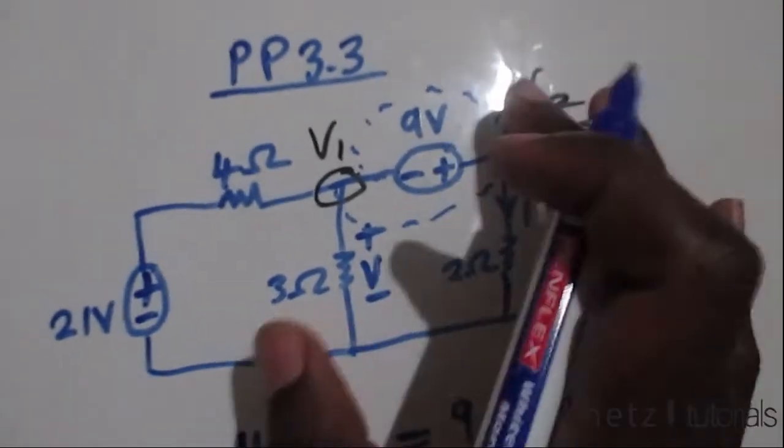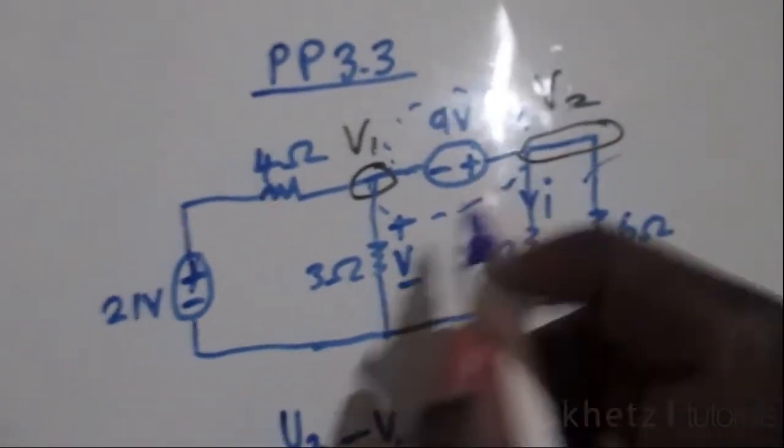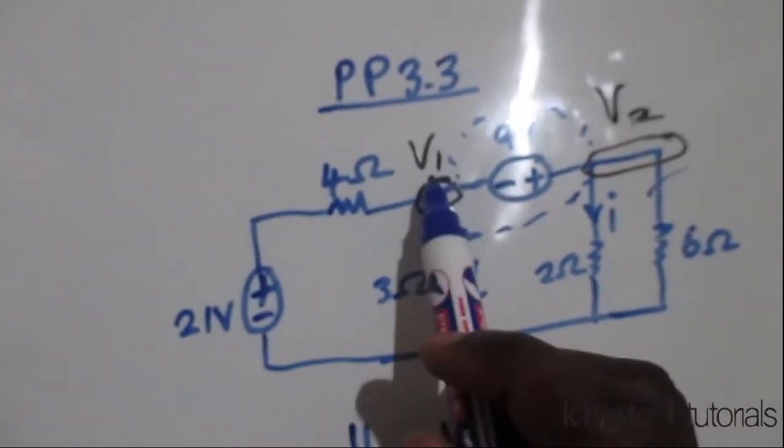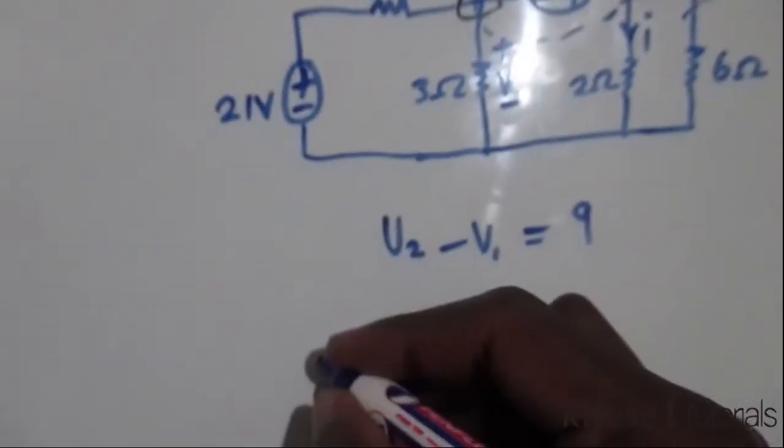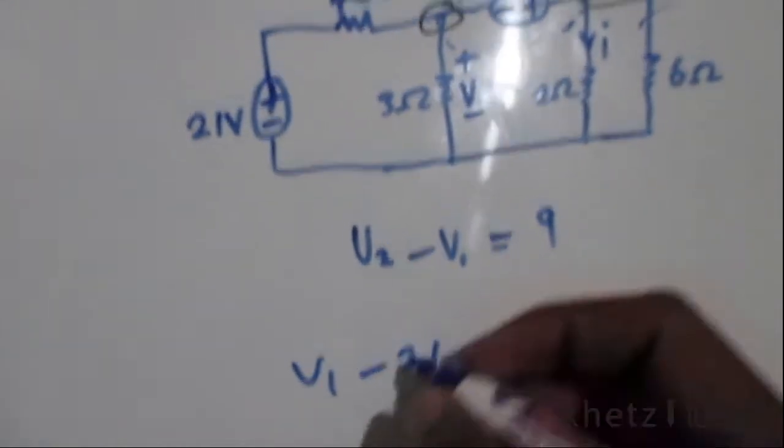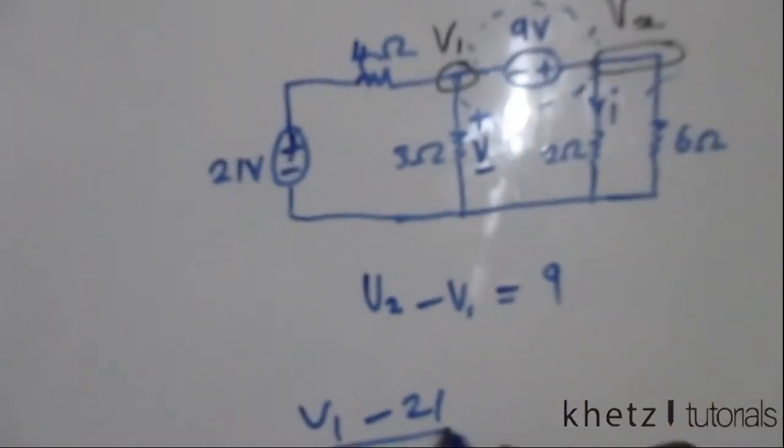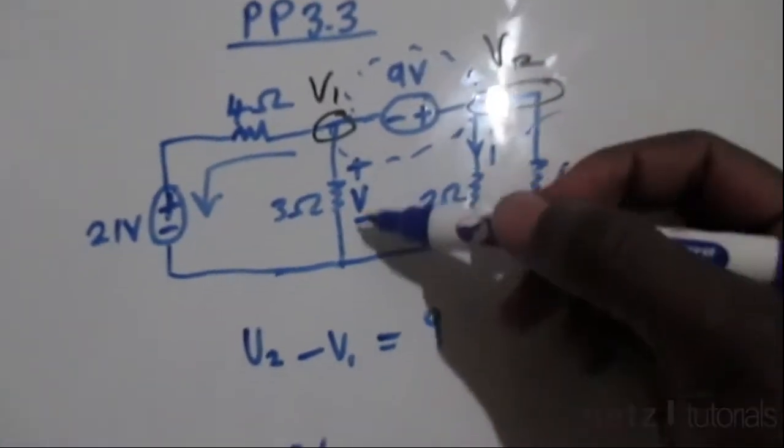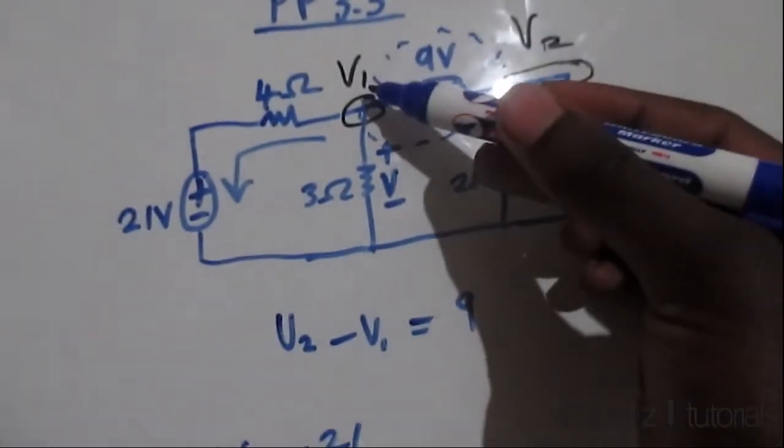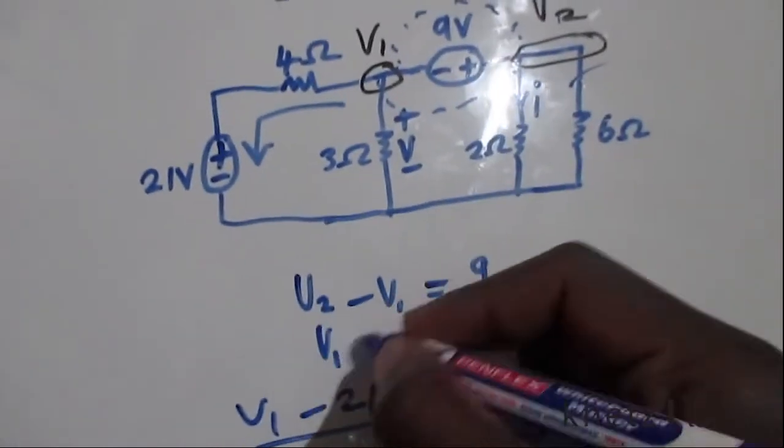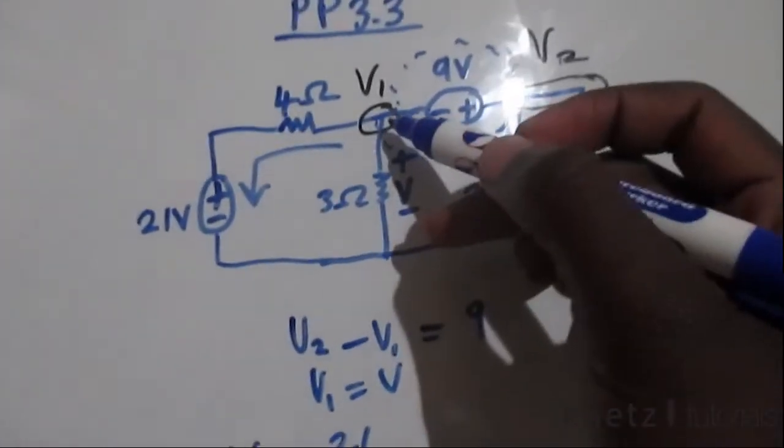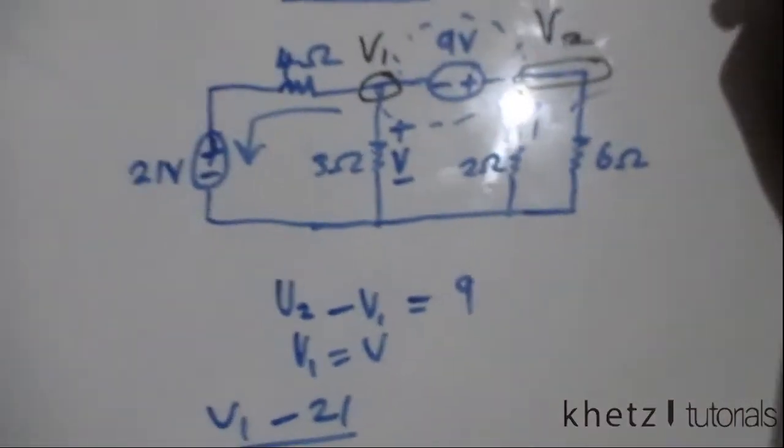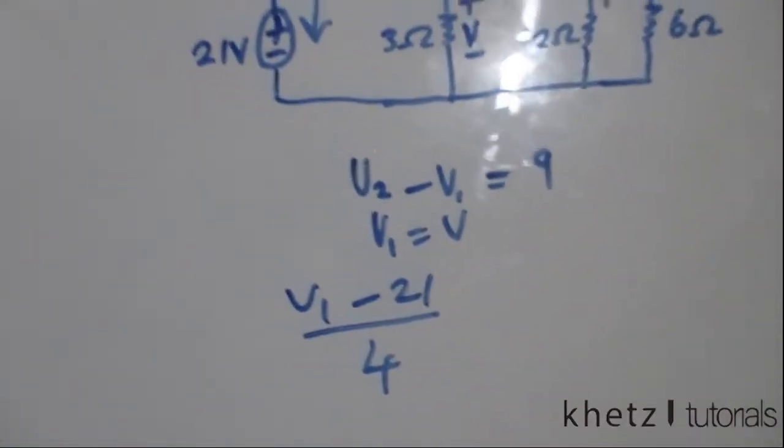All of this is taken as one node, so we're going to have v1 minus 21 divided by the resistor value of 4, which is in this path here. Then we're going to have v, which is the same as v1. V1 equals v because if you say v1 minus zero, that's where you get v. So v1 is across the 3 ohms.